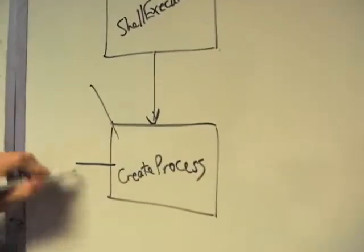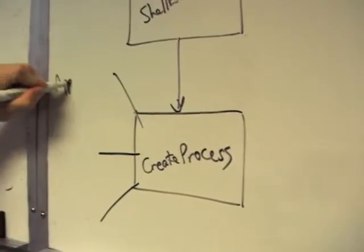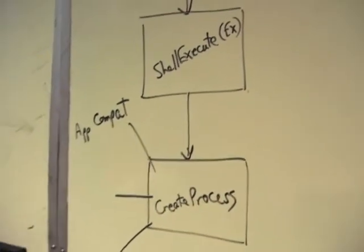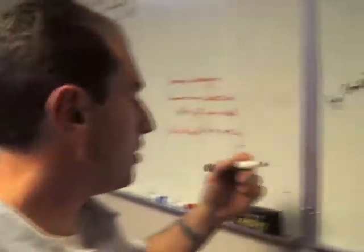For a standard user launching a process in Vista, the basic process creation path didn't change. What did change is the case where you're running as a standard user and need to launch something that requires elevation. The first thing we had to do was figure out that this executable requires more permission than the current user has — actually requires elevation. There are three checks that happen inside CreateProcess. The first one is AppCompat, which covers applications specifically marked as admin applications, plus the bulk of the heuristic checks — name matching, file description mapping, various fields from the executable.